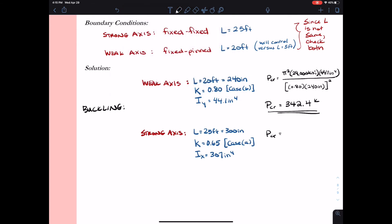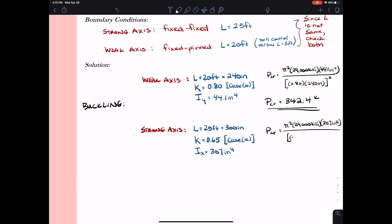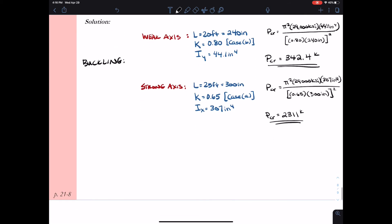So I go in and I'm going to use pi squared EI over KL squared. So that gives me pi squared times 29,000 KSI times 307 inches to the fourth divided by the quantity of 0.65 times 300 inches squared. So doing my math, P critical in this instance equals 2311 kips. Like I said, weak axis usually always controls. And even with the smaller length, weak axis still controlled pretty significantly for this column member.